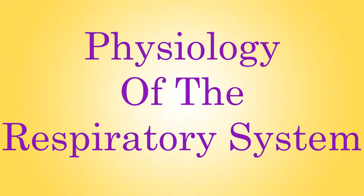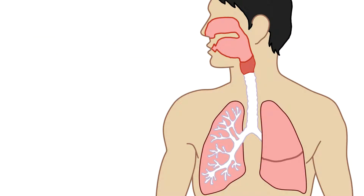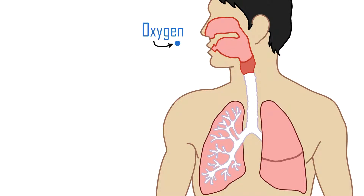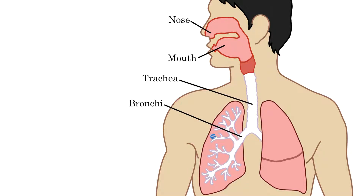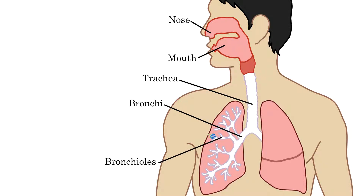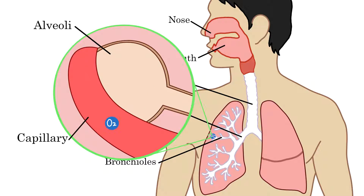So first, before we can talk about the pathophysiology of asthma, we need to know about the physiology of the respiratory system and how it helps the body maintain homeostasis. In someone with normal lung function, air is inhaled through the mouth and nose, then travels through the trachea into the bronchi, which are the large airways that branch into smaller and smaller tubes until they end in small sacs called alveoli. It is here where gas exchange occurs — oxygen is passed from the alveoli to the blood in the capillaries, while carbon dioxide is passed from the capillaries to the alveoli for removal during exhalation.